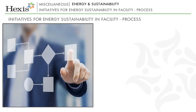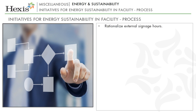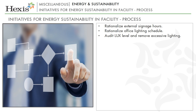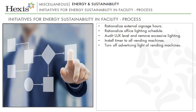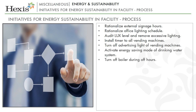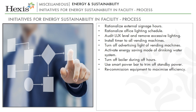Next, let us look at the initiatives to be taken on the process front of facilities for energy sustainability. These include: rationalizing external signage hours; rationalizing office lighting schedules; auditing LUX levels and removing excessive lighting; installing timers on all vending machines; turning off advertising lights on vending machines; activating energy-saving mode on drinking water systems; turning off boilers during off hours; using smart power bars to trim standby power; recommissioning equipment to maximize efficiency; and shutting down a number of lifts after rush hours.